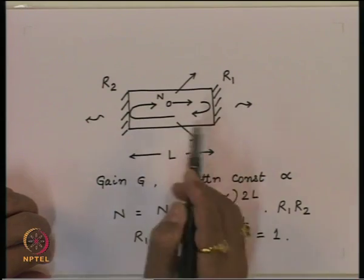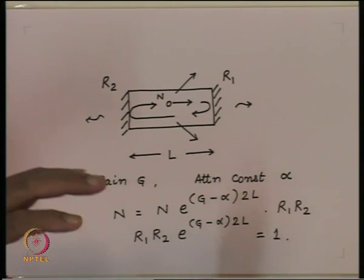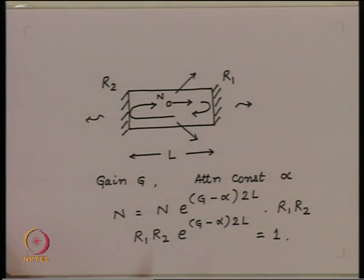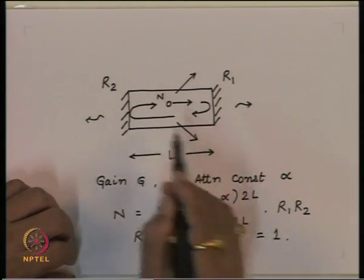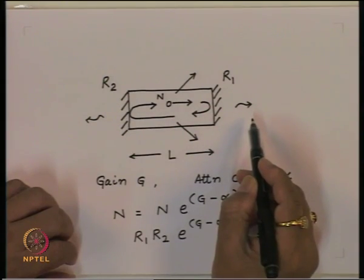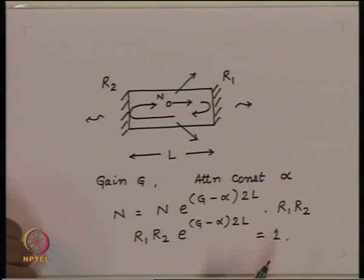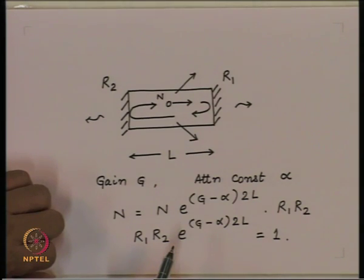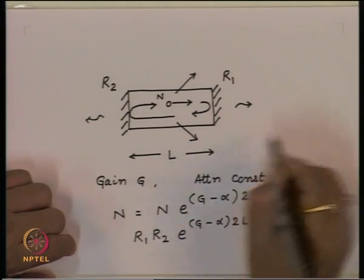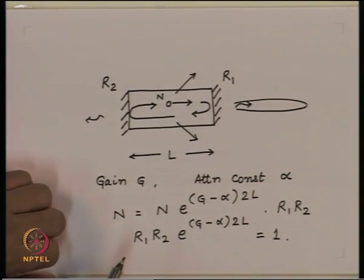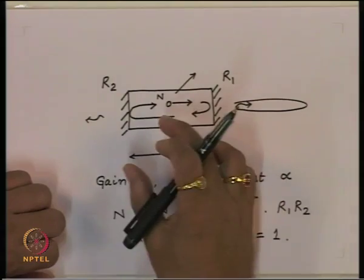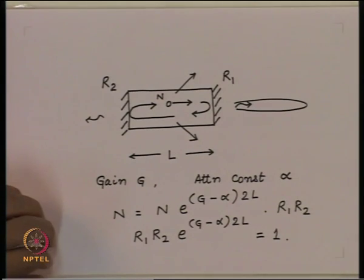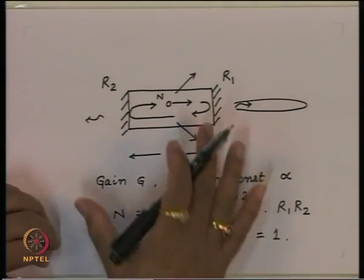Intrinsically we had temporal coherency where spectral width was very small, corresponding to sharp energy levels. But originally there was no spatial coherency. By putting these mirrors, we have introduced spatial coherence because now only photons moving in this direction get amplified, while photons going in other directions do not get significantly amplified. So this emission coming out will be spatially coherent — in other words, the radiation from here will be a highly beamed, narrow radiation corresponding to photons bouncing back and forth between the two mirrors. This is the very important condition for sustained oscillation inside this region.